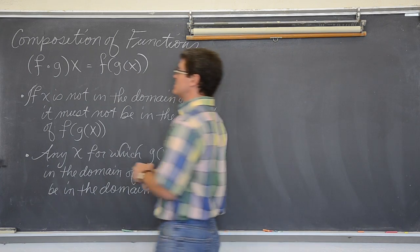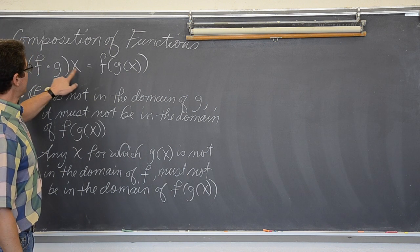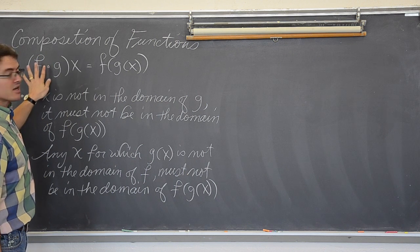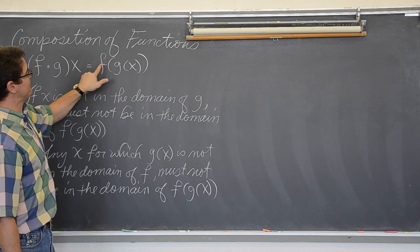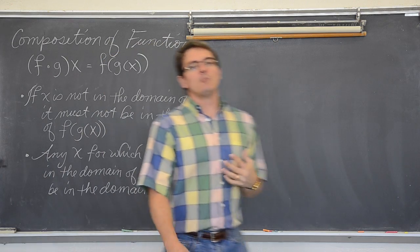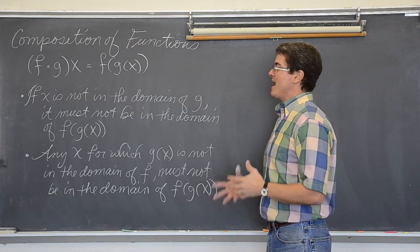The composition notation is f open dot g of x. Or, this is how my textbook uses this notation a lot, you might also see it as f of g of x. I like this notation better because it really more clearly explains what is happening.